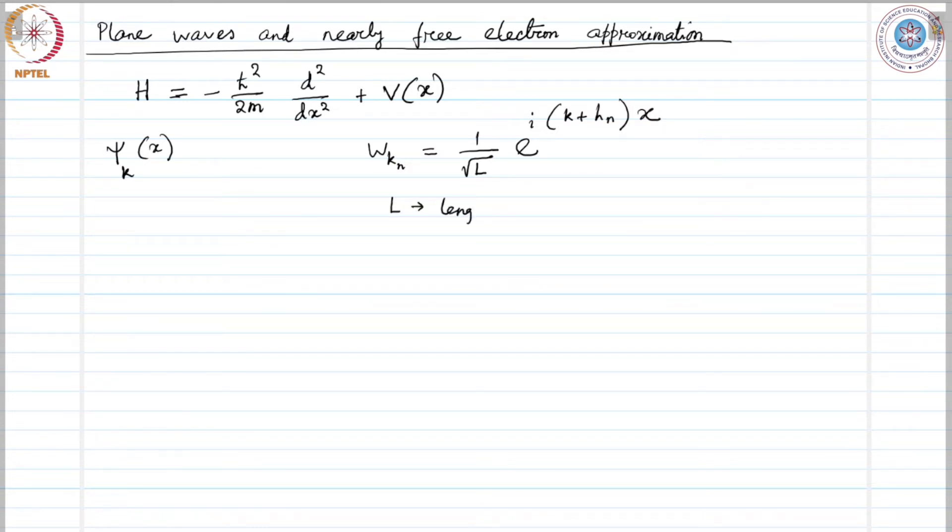And h n, this quantity is given by n times 2 pi over a, where a is the lattice constant.